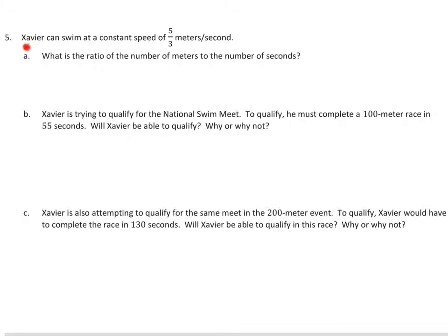We'll start by looking at number 5, where we have Xavier, who could swim at a rate of 5 thirds meters per second. We're going to recognize that 3 thirds would have been a full meter per second. Xavier could do 5 thirds — more than a meter per second. Even though this is an improper fraction, this given rate is equivalent to the ratio 5 to 3. So in part A, when it asks what is the ratio of meters to seconds, the answer is 5 to 3.